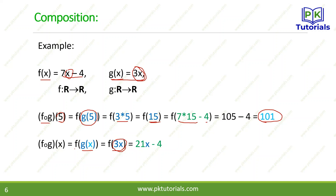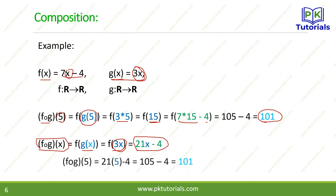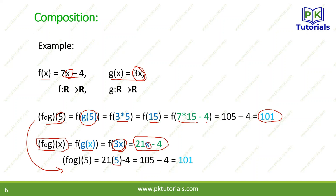We can also find the composite function directly. f composite g of x = 7(3x) − 4 = 21x − 4. Then plugging in 5: 21 × 5 − 4 = 105 − 4 = 101. This is a shortcut — compute the composite formula first, then substitute the input.